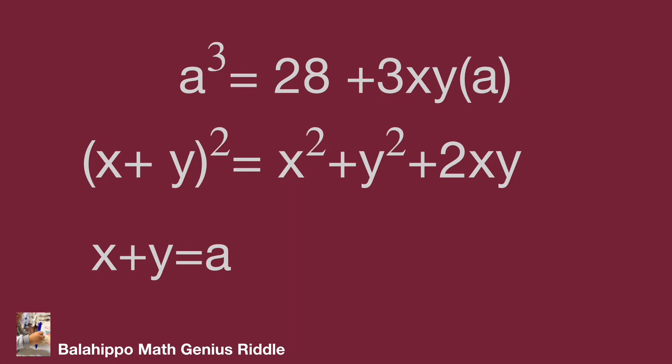Substitute x plus y by a and the given information x squared plus y squared equal to 19 to the second equation.